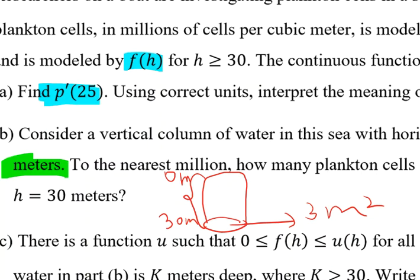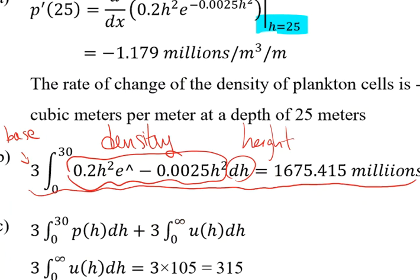Therefore, we need to calculate the integral from 0 to 30 times 3 of p(h) dh, because it's a piecewise function and p(h) works for the density between 0 and 30. In this equation, dh means the height of the column, and 3 means the base of the column.